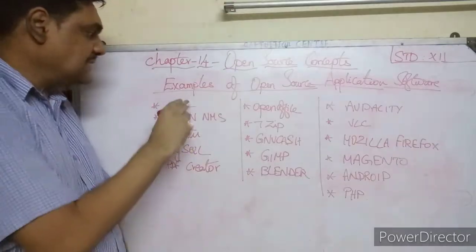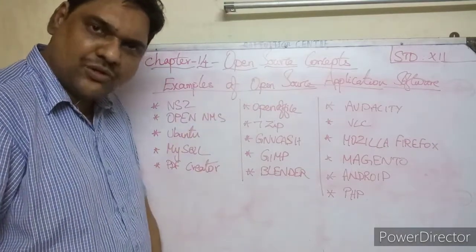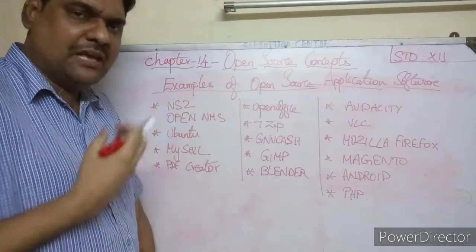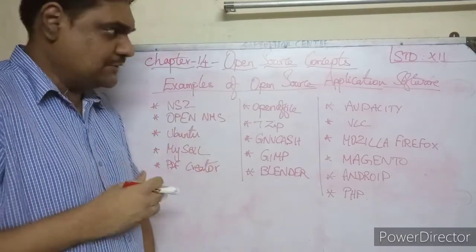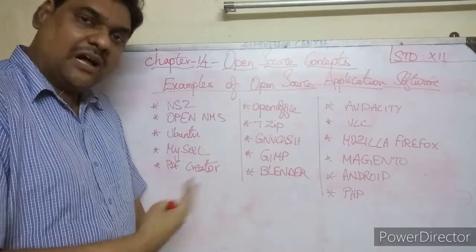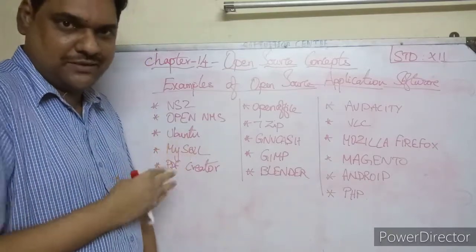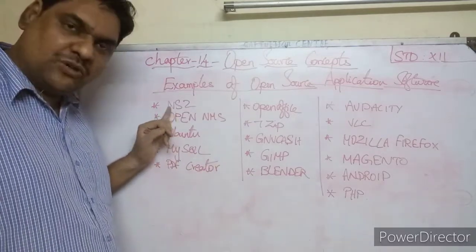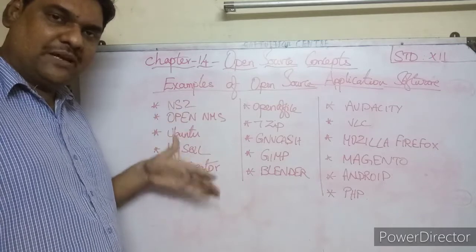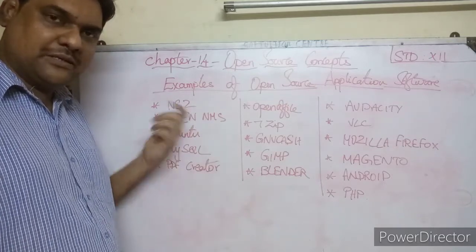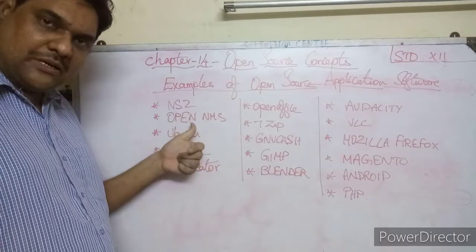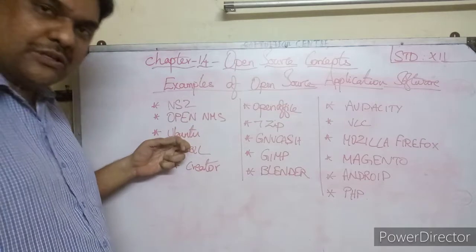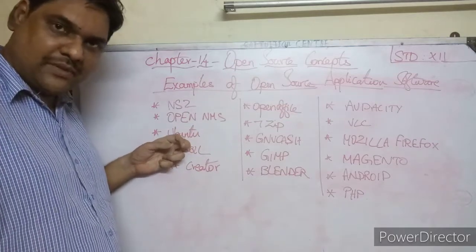Now let us see some examples of open source application softwares. There are many open source softwares available — you can download and use them as needed. Some key examples: NS2, which stands for Network Simulator 2, is used for network-related work. Unix and Linux are also open source operating systems.